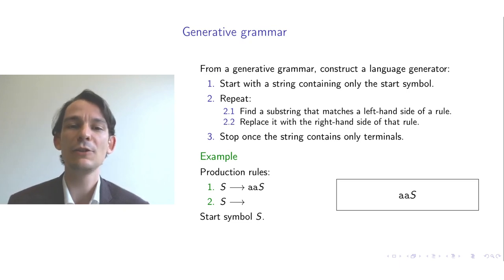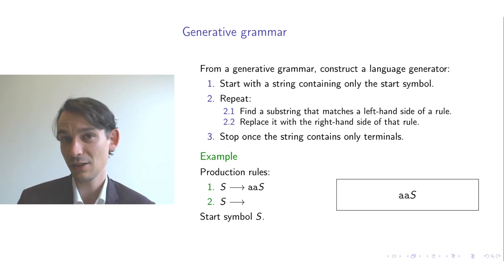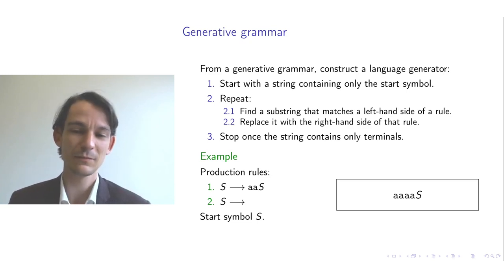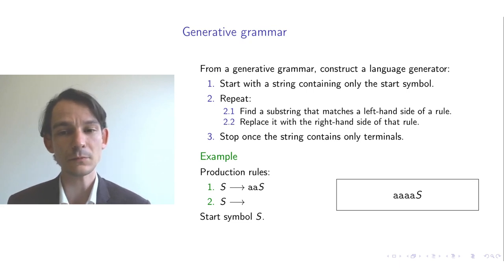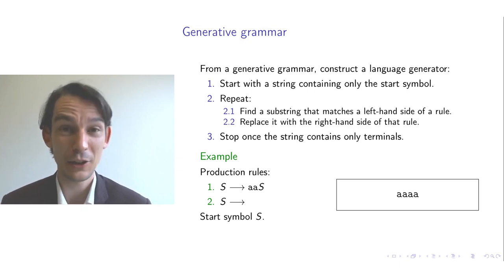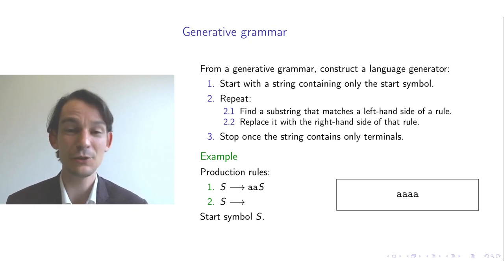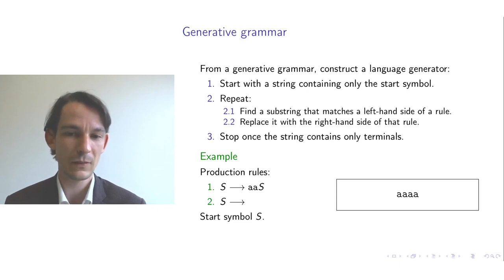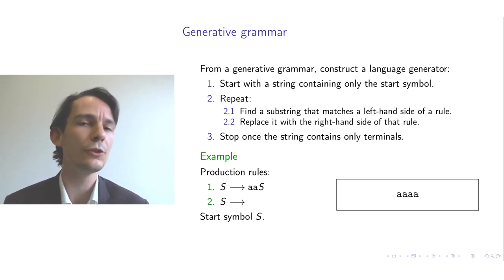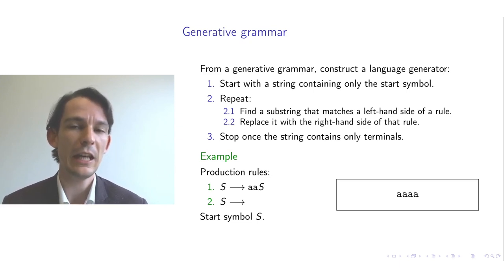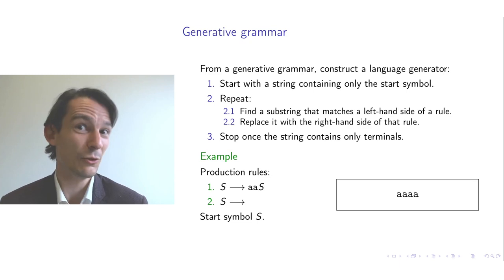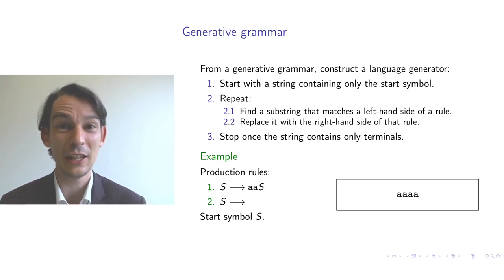Again we repeat. S matches, so we can replace it by one of the two right-hand sides — let's do the first again, giving us A, A, A, A, S. Now we find a left-hand side match — S obviously matches — and we replace it with nothing, because that is what the second production rule means: if you find an S, you can remove it because the right-hand side is empty. So this is a language generator because at each step you had a choice between which production rules to apply, and for every possible choice you might get a different string, which is then considered a sentence of your language.